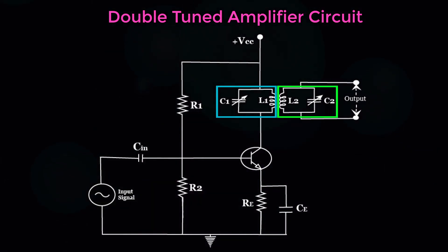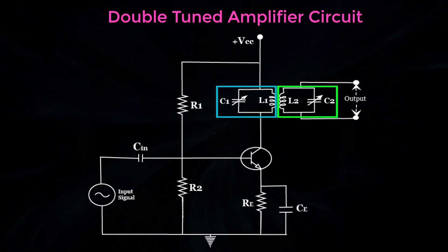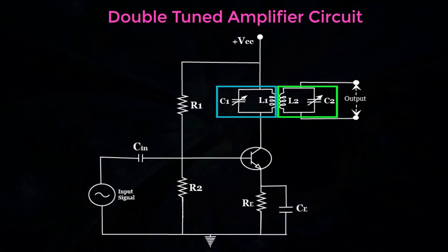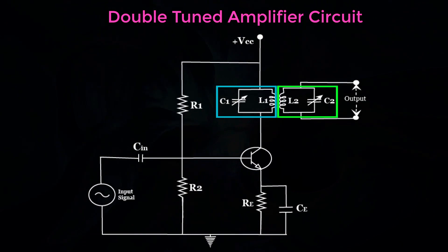L2 C2 through mutual induction. These double tuned circuits are extensively used for coupling various circuits of radio and television receivers.